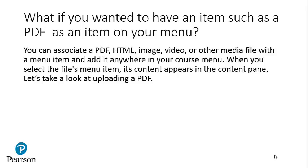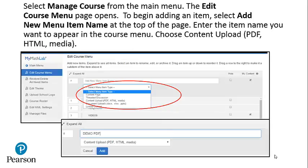Let's take a look at uploading a PDF. Select Manage Course from the main menu. The Edit Course menu page opens. To begin adding an item, select Add New Menu Item at the top of the page.